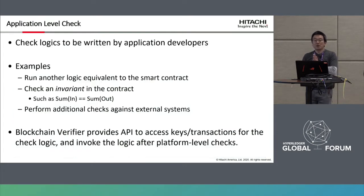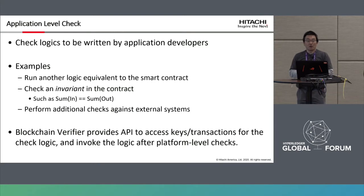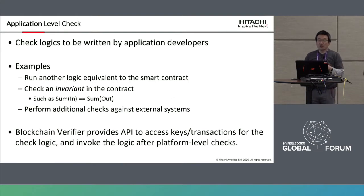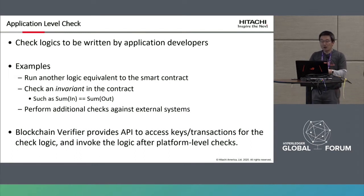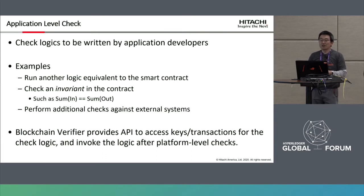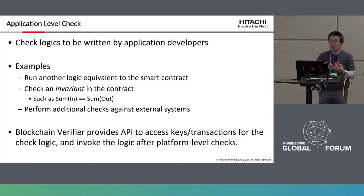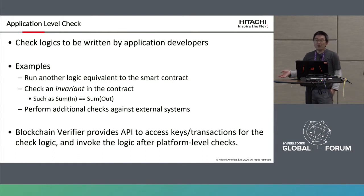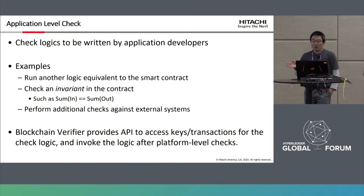For application-level checks, the check logic is written by application developers. For example, run all logic equivalent to the smart contract but in different code. Check an invariant in the contract, such as the sum of inputs equaling the sum of outputs. And perform additional checks against external systems to verify consistency between the blockchain and outside systems. The blockchain verifier provides APIs to access key transactions for the check logic, then invokes the logic after platform-level checks.